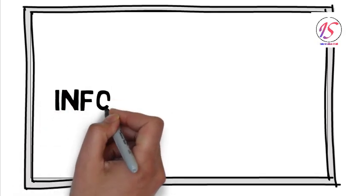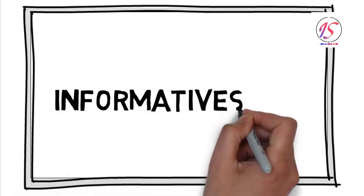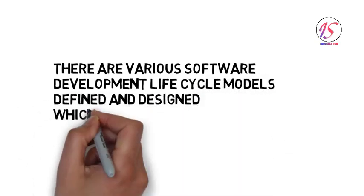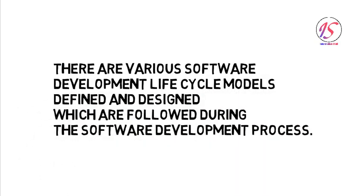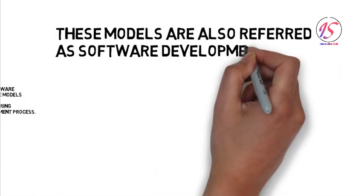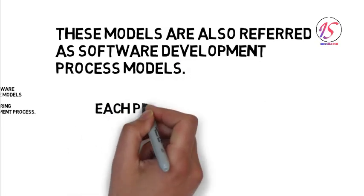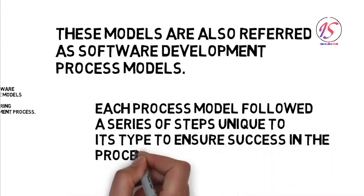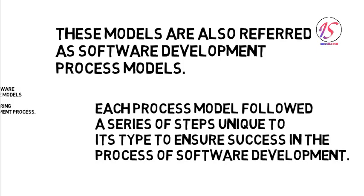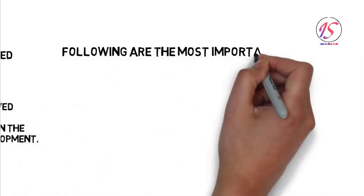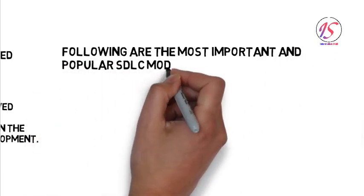Hi, this is Furkan and you are listening to Informative Stock. In this series of software engineering videos, we are going to discuss SDLC models. There are various software development lifecycle models defined and designed which are followed during the software development process. That's why these models are also referred to as software development process models. Each process model follows a series of steps unique to its type to ensure success in the software development process.